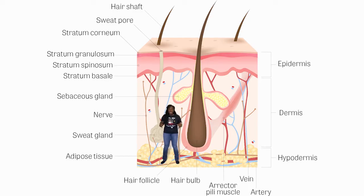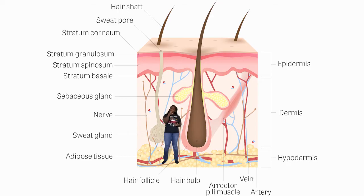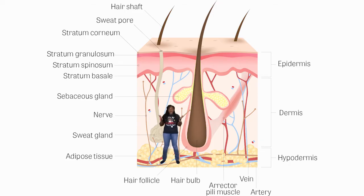The hypodermis is filled with adipose tissue, also known as fat. The adipose tissue stores fat and provides insulation for the body. You'll also notice that the hypodermis is well vascularized because it contains larger blood vessels and nerves than those found in the dermis.